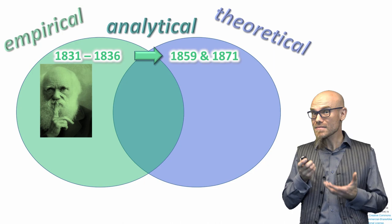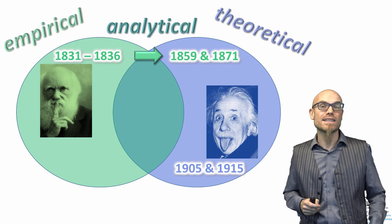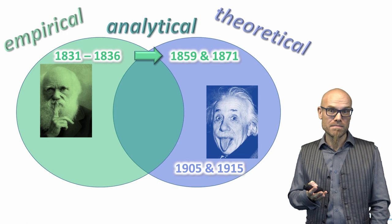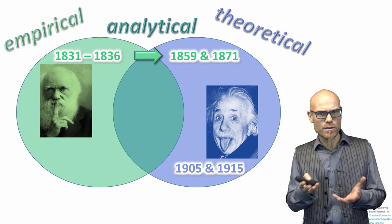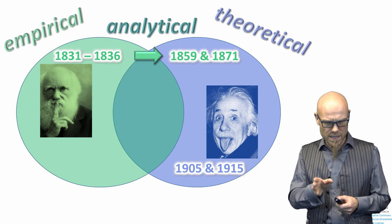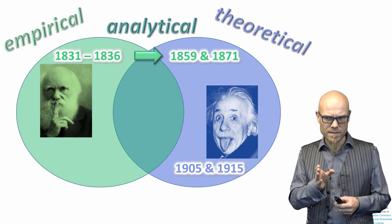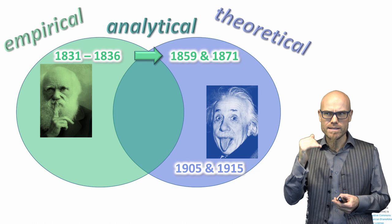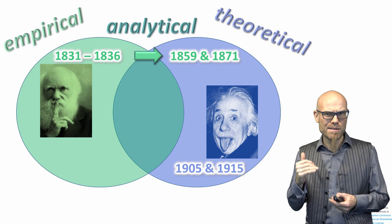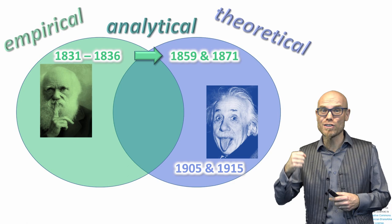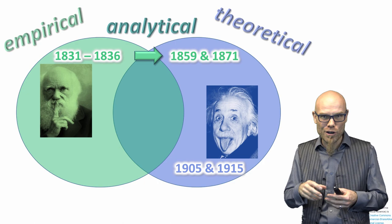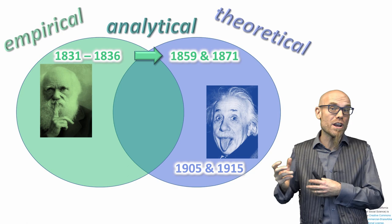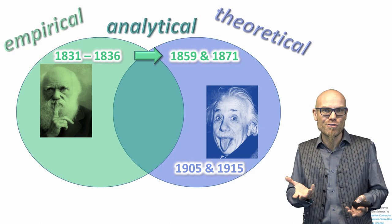Einstein went the other way around — he started with theory. There were a few known observations at the time: the speed of light is always constant. Einstein reasoned: if speed equals miles per hour, there's space and there's time, then something has to happen to space-time. He derived that it must be a space-time continuum that curves, that time is just the fourth dimension of space. He wrote this train of thought all the way through and concluded: if that first premise is correct, all this other stuff has to be correct too. That's the theory of relativity.